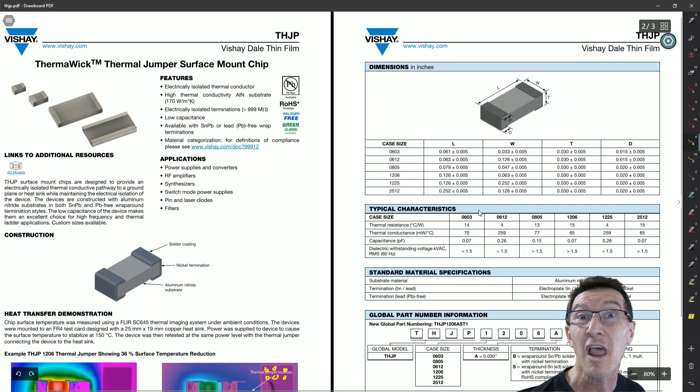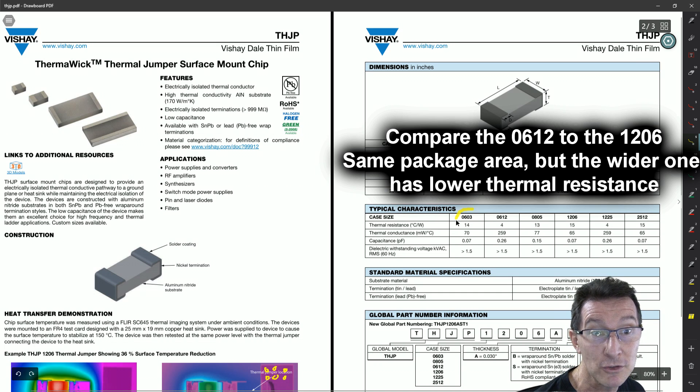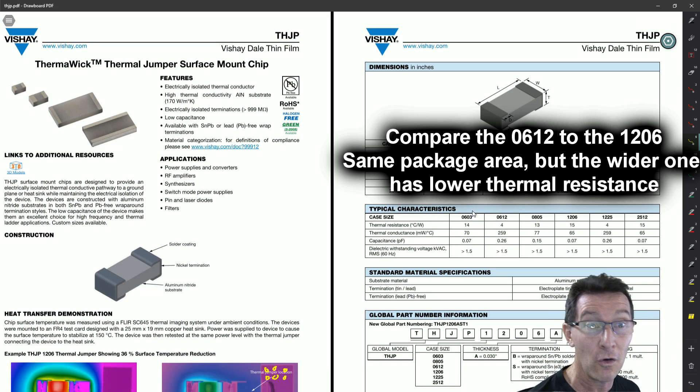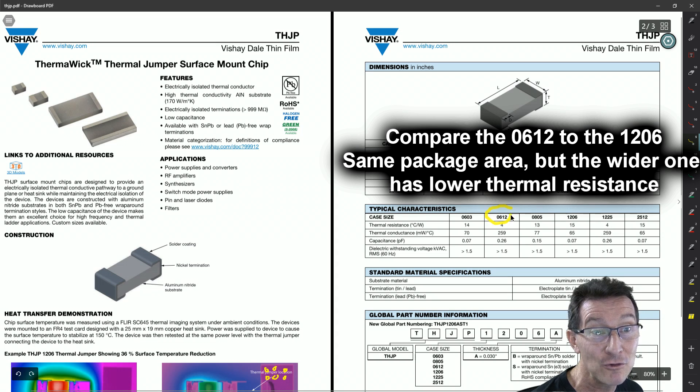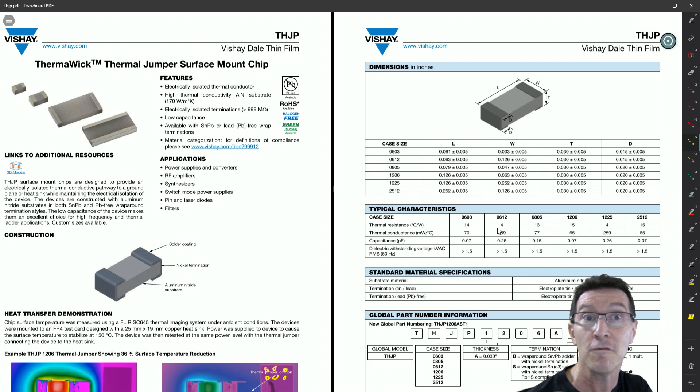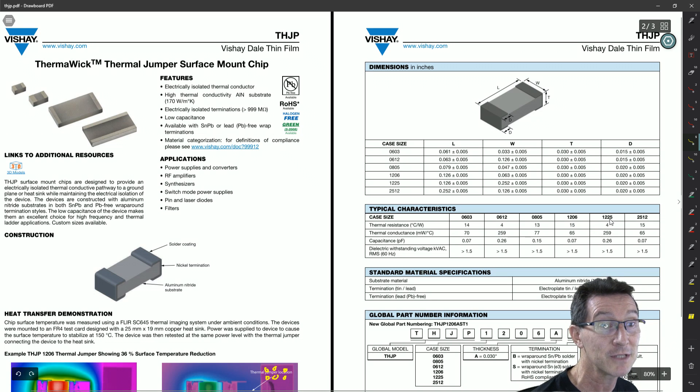Like this is what 0603 means is that it's half as wide as it is long. So, but this one, the 0612, is twice as wide as it is long. And it drops from 14 degrees C per watt to 4 degrees C per watt. So, 4 degrees C per watt is on par with like 10 thermal vias or something like that. So, it's pretty decent performance.